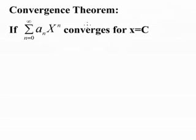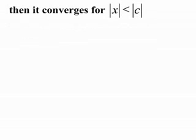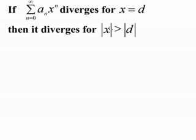Here is a very important convergence theorem. If a power series — the sum from n equals 0 to infinity of a sub n x to the n — converges for some value x equals c, then it also converges for the absolute value of x less than the absolute value of c. The counterpart to that theorem says: if the sum from n equals 0 to infinity of a sub n x to the n diverges for x equal d, then it also diverges for the absolute value of x greater than the absolute value of d.